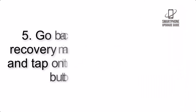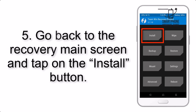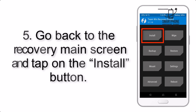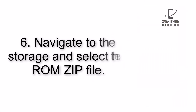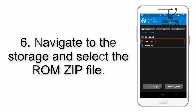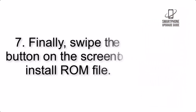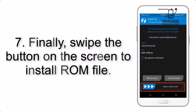Step 5: Go back to the recovery main screen and tap on the Install button. Step 6: Navigate to the storage and select the ROM zip file. Step 7: Finally, swipe the button on the screen to install the ROM file.